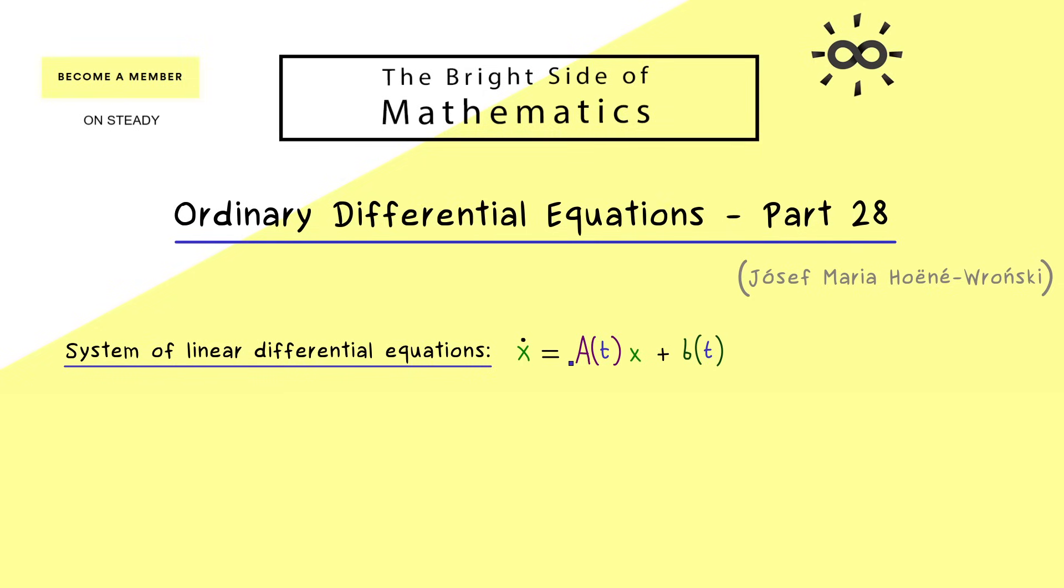In the general form, we have the matrix A(t) times x plus a vector b(t). This is the general form of a system of linear ODEs. However, there are some assumptions involved here, namely we want that the two functions A(t) and b(t) are continuous functions.